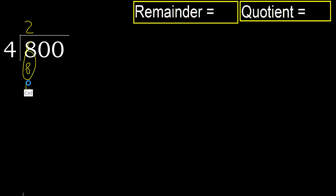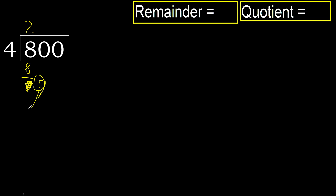Subtract. 8 minus 8 is 0. Next, eliminate the 0 on this side. 0 is less, therefore next.